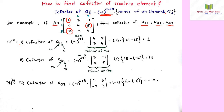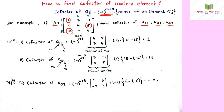The minor of an element is obtained by deleting its corresponding row and column. For a11, we delete the first row and first column. Whatever remains — 4, 5, 3, 4 — that is the minor of a11.